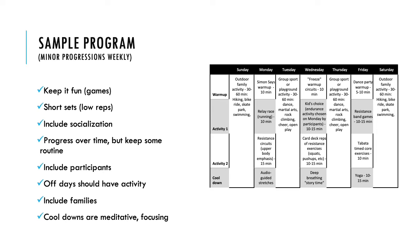Here is a sample program. I would do some minor progressions over time but hold to a rough structure. This is a weekly schedule, adjustable to the individual or group. Key points: keep it fun, do short sets with low reps to keep it interesting, include socialization, and progress over time while keeping some routine. Include participants in the planning — for example, I have one session I call 'Kids' Choice,' where I ask them what activity they want to do next time, giving them ownership and something to look forward to.